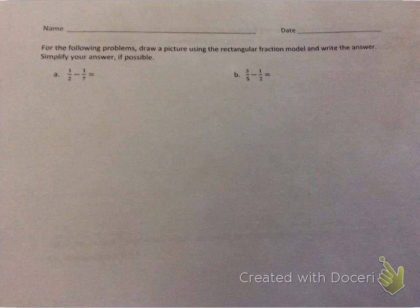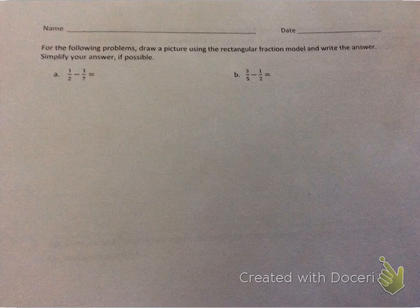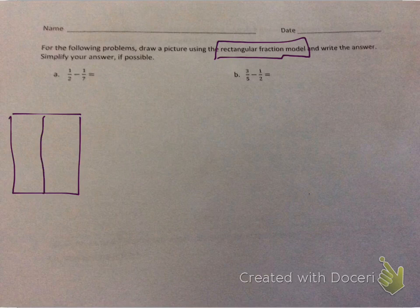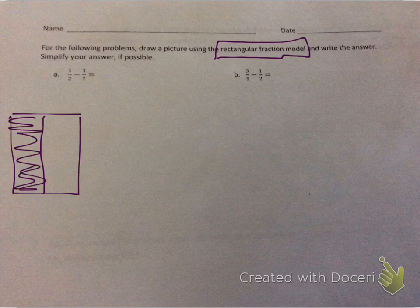So A is 1/2 minus 1/7. The first thing we need to do is draw our rectangular fraction model. 1/2 can be represented by drawing a rectangle, cutting it in half, and then shading 1/2 of it. I'm going to label that with 1/2.